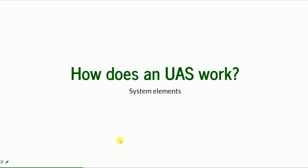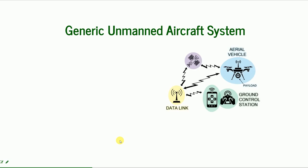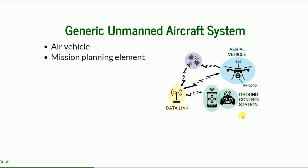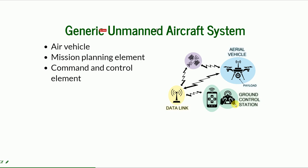How does a UAS work? We mentioned before that this is a system, so it comprises many elements. The essential three elements are the vehicle, the ground control station, and the link. The mission planning element is included in the ground control station. It can be planned before the flight and is widely used in data acquisition because we have more control over the flight when it's executed autonomously and pre-programmed. But we can also use the command and control element as the remote pilot and fly the airplane wherever we want.